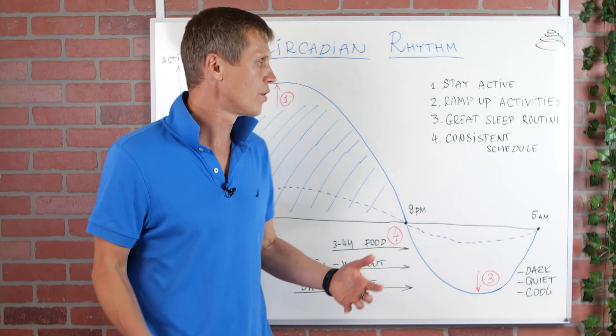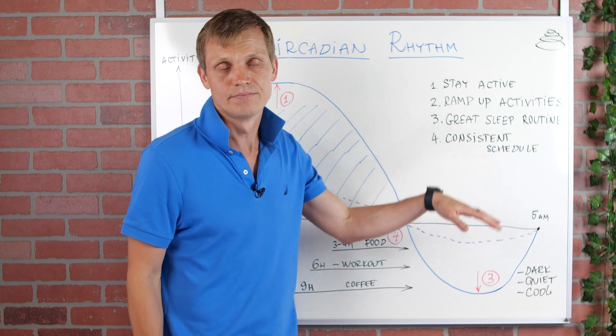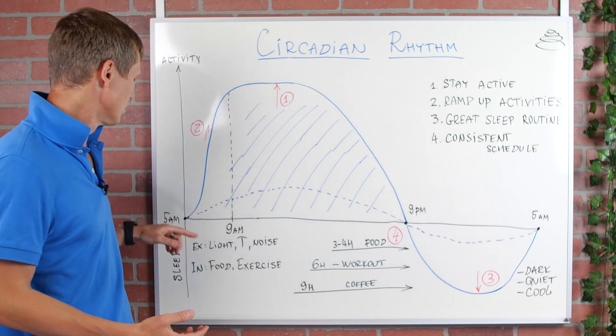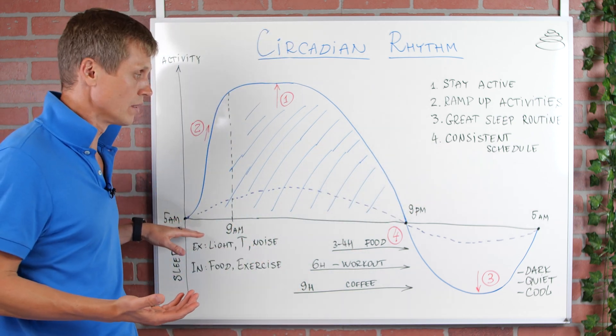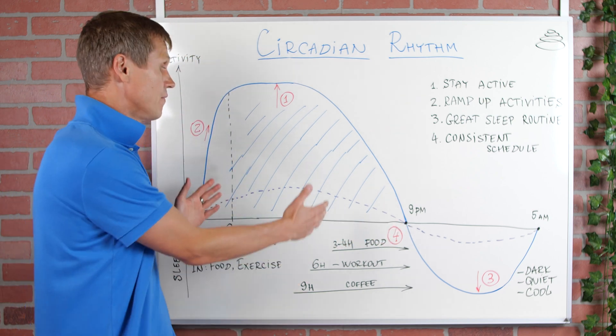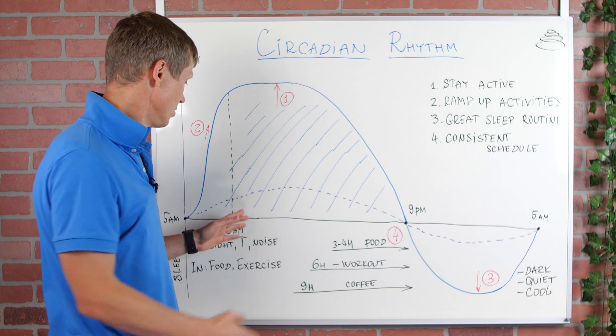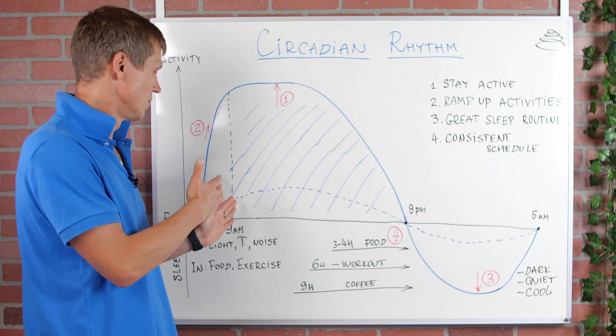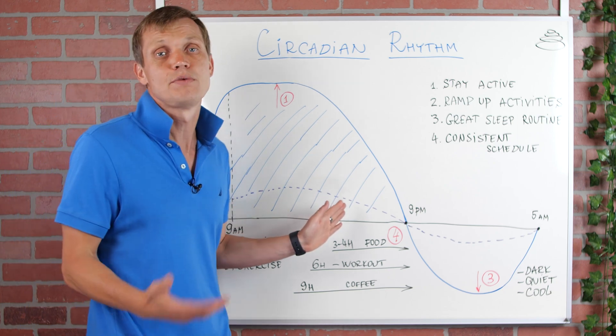Finally, focus area number four is to have a consistent schedule. And here we're talking about to wake up at the same time in the morning, to get to sleep at the same time in the evening, to have food intakes at the same time. So, in my case, it's about 10 am for the lunch and 5-6 pm for the dinner. I'm trying to work out at the same time of the day.